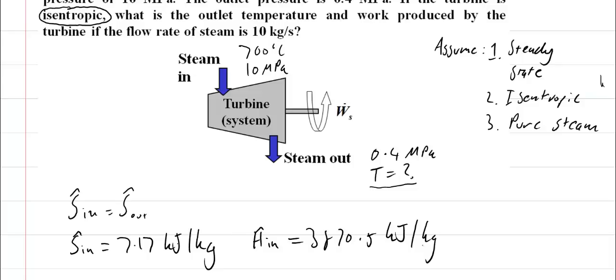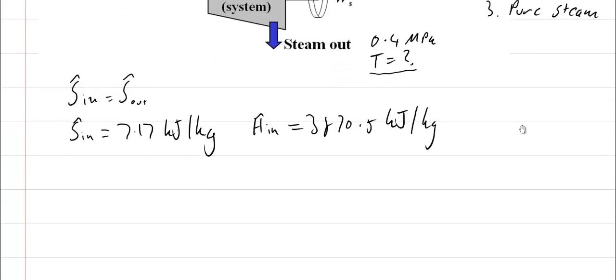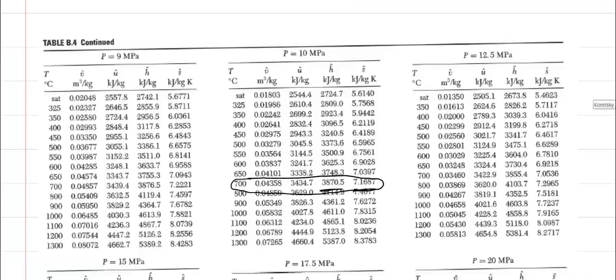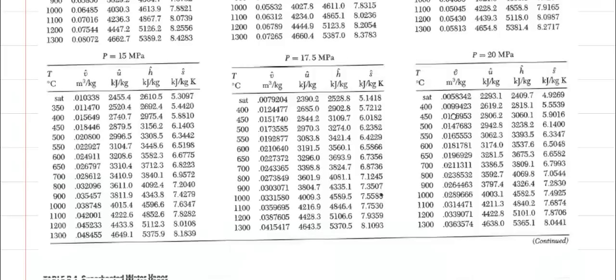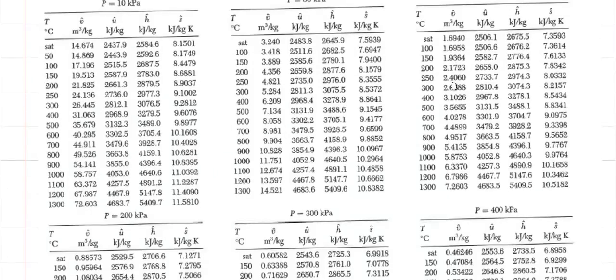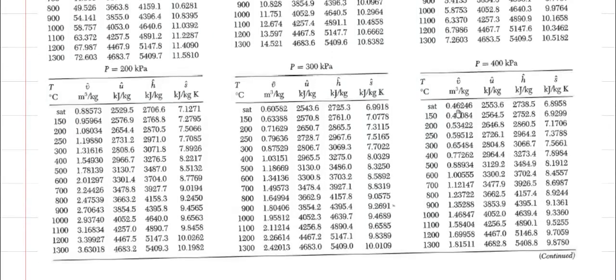Now to find what my outlet condition is, I need to find at what temperature my entropy is this for my outlet pressure of 0.4 megapascals. I go back to my data and scroll down to 0.4 megapascals.